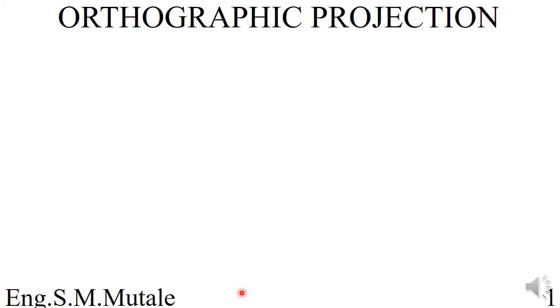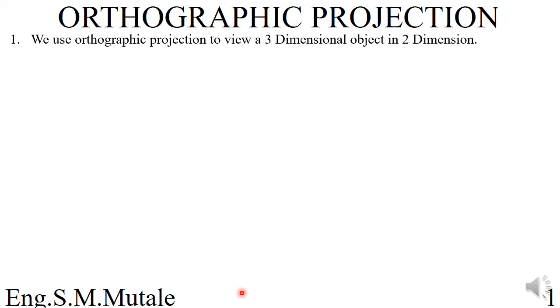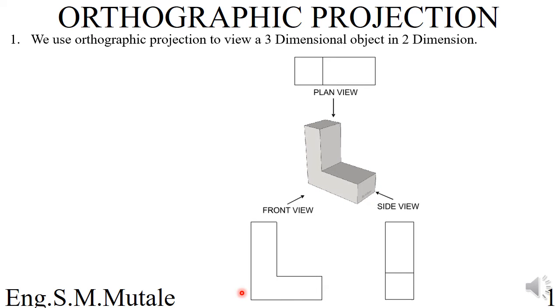Welcome to this presentation on orthographic projection. We use orthographic projection to represent three-dimensional objects in two dimensions. Given a 3D or isometric object, you can view its plan view from above, its front view from the front, and its side view from the side.